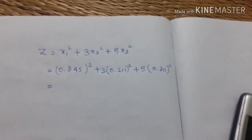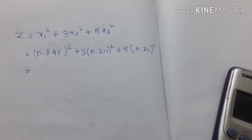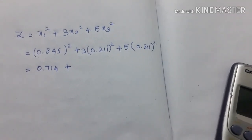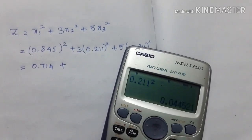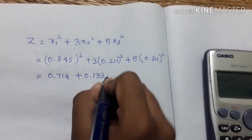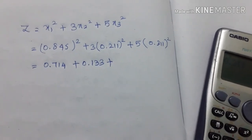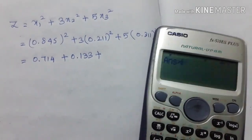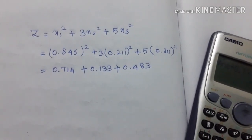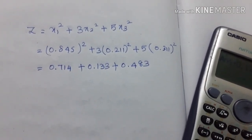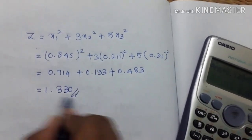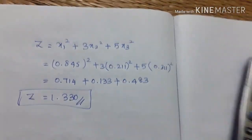Now substituting into the objective function: 0.845 squared plus 3 times 0.211 squared plus 5 times 0.311 squared. So 0.845 squared equals 0.714, plus 3 times 0.211 squared equals 0.133, plus 5 times 0.311 squared equals 0.483. Adding these values: 0.714 plus...